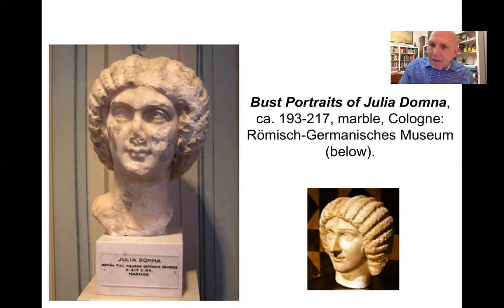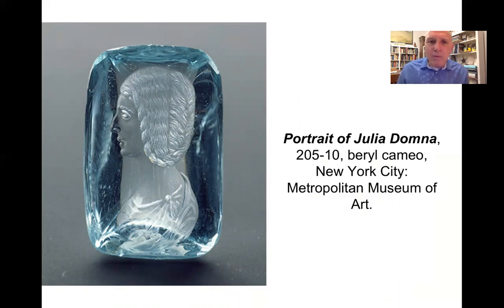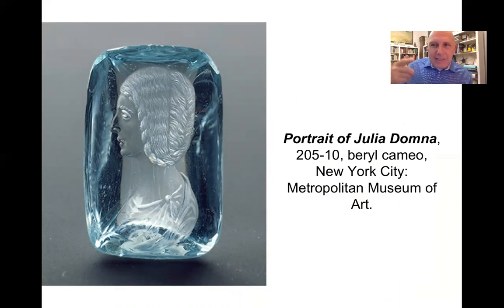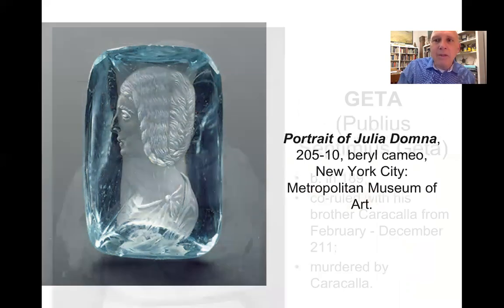Here are coins showing us Julia Domna — notice the very distinctive hairdo characteristic of Severan hairstyles during the rule of Julia Domna and Septimius Severus. These bust portraits with that interesting coiffure come from the northern provinces in Germania — from the Römisch-Germanisches Museum in Cologne, Germany. There is also a wonderful cameo in beryl — a beautiful blue glassy stone — showing a portrait of Julia Domna with that distinctive hairdo parted in the middle, braided in the front, wrapping around in the back. A very distinctive image of Julia.